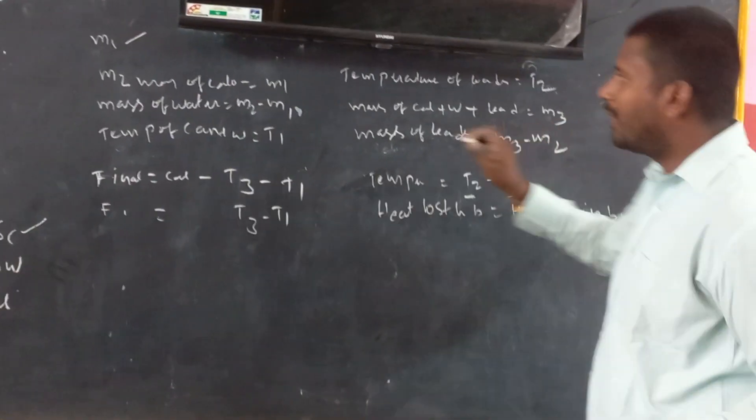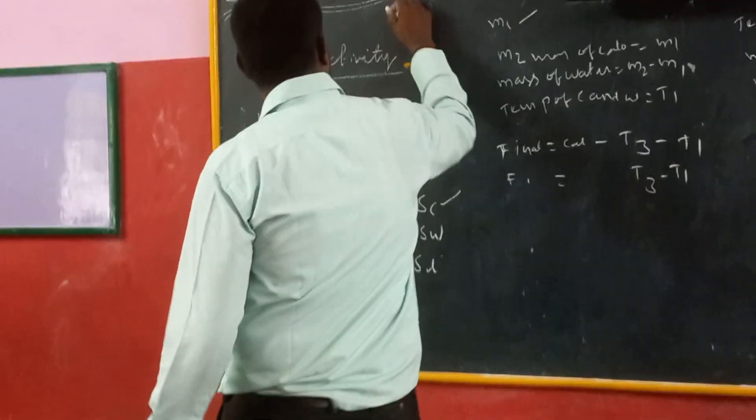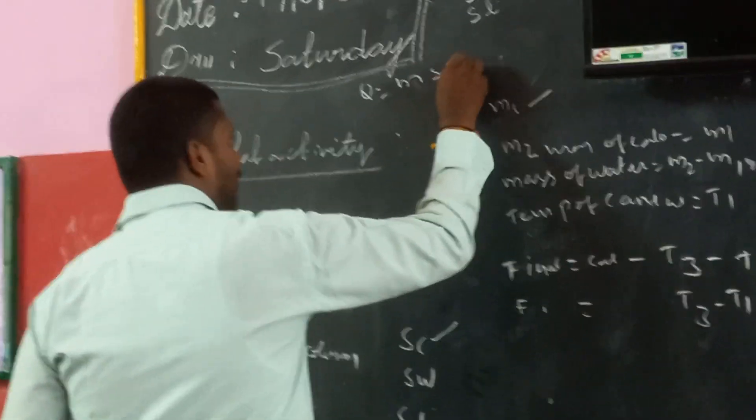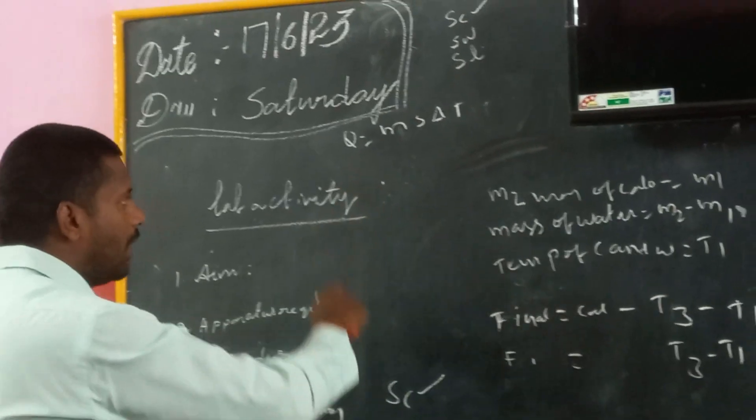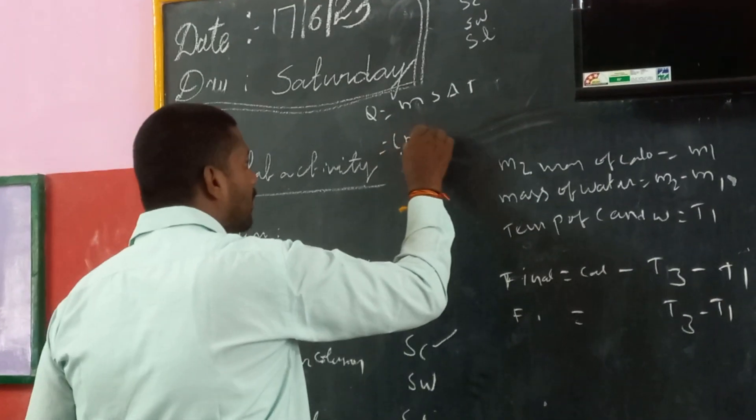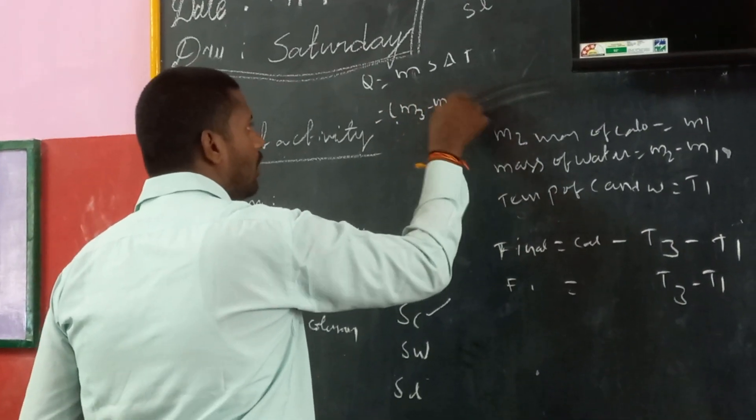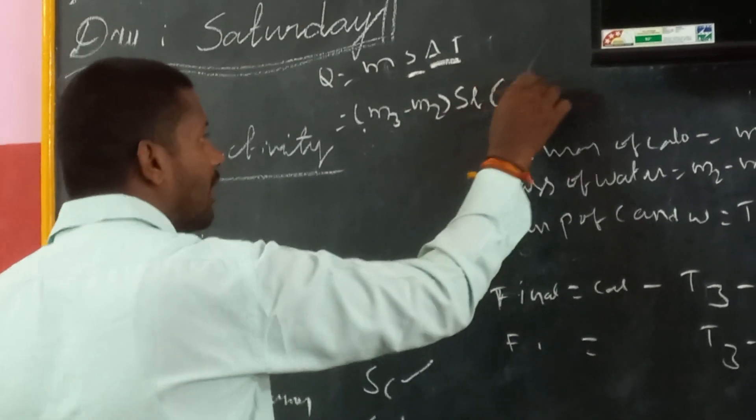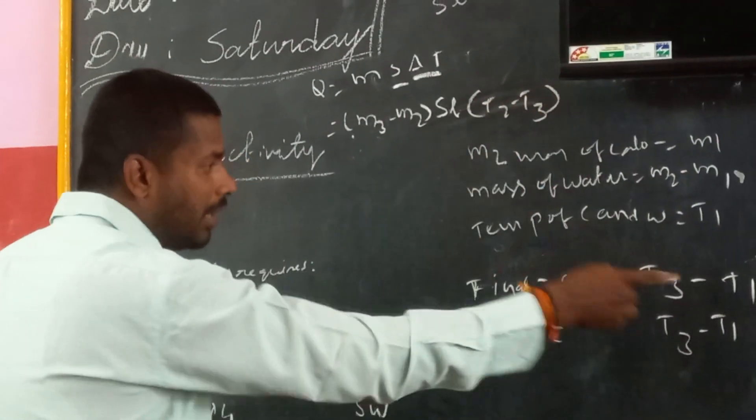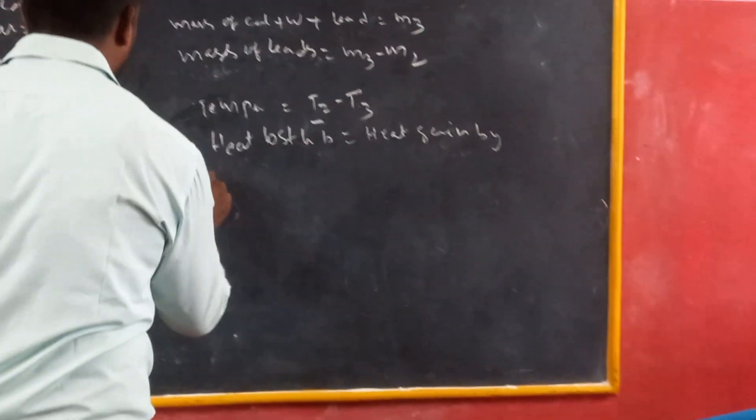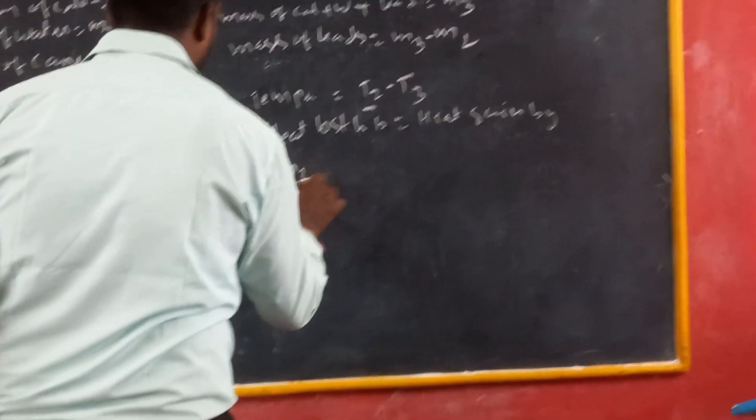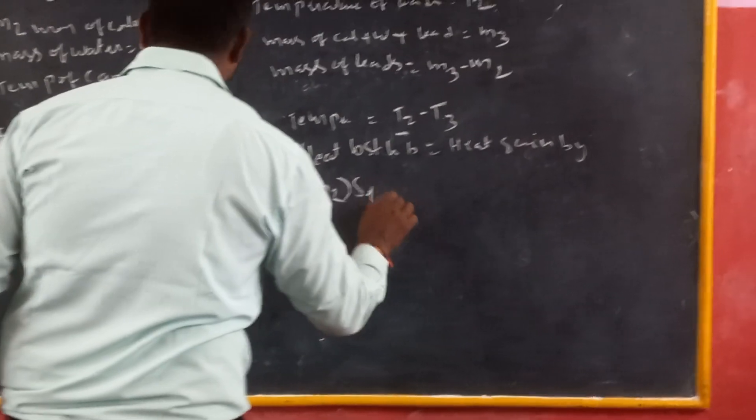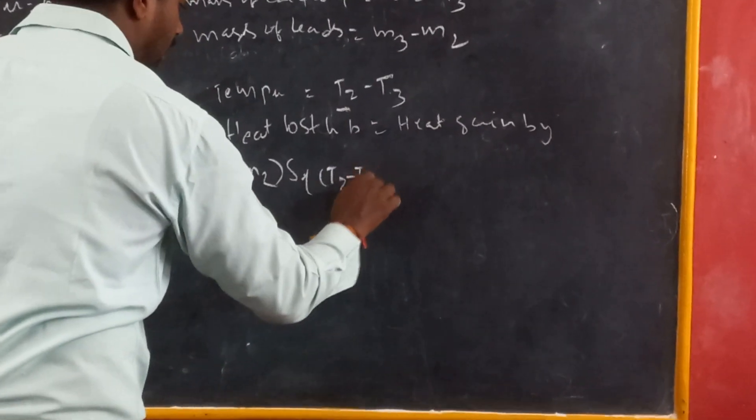We have a formula regarding heat. Q equals to MS delta T. What is the M of lead shots? M3 minus M2. S of lead shots? SL. Temperature of lead shots? T2 minus T3. Replace the value. M3 minus M2 into SL into T2 minus T3.